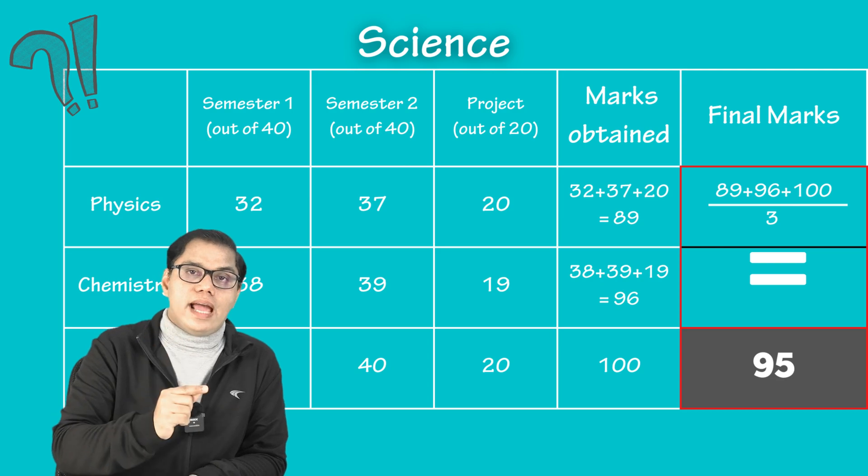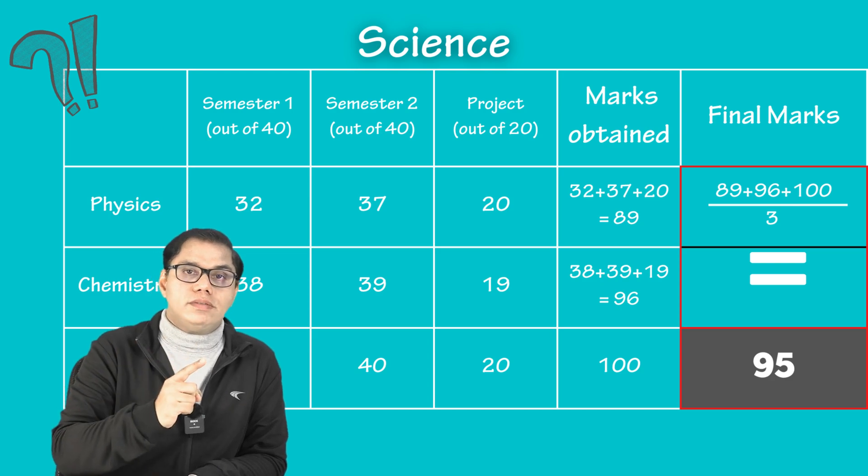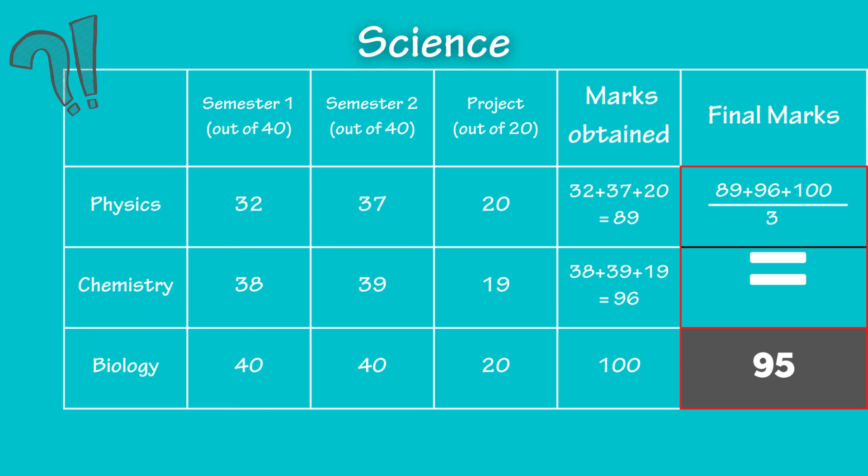Let's move on to next subject, which is science. This science is comprised of three subjects, three papers which you have written. One is physics, other one is chemistry and third one is biology. Again, let us assume a situation that a student has scored 32 out of 40 in physics. We remember what has happened in semester one examination. So I have considered a low score over here. That is 32 out of 40. Then in semester two, 37 and project work, teacher was very kind to give 20 on 20. His final marks for physics is 89. We are going to come back to this 89 marks later on when we take an average for science.